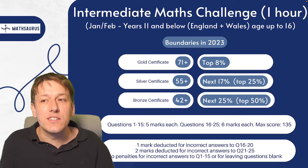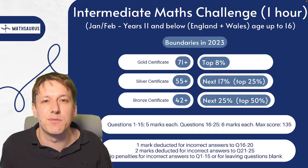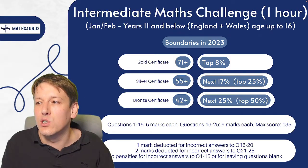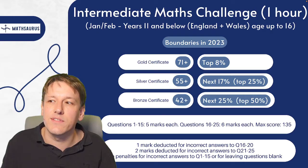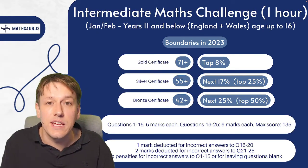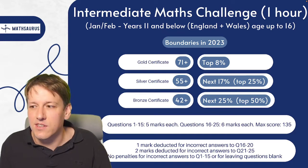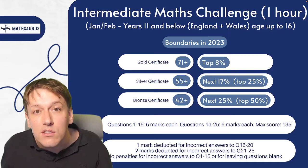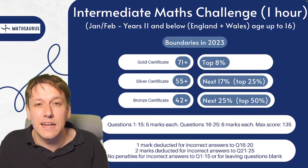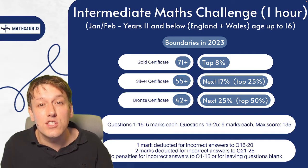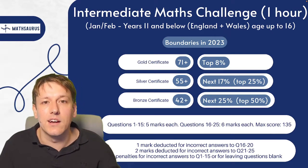The Intermediate Maths Challenge is quite similar to the Junior Maths Challenge: a multiple choice paper with 25 questions, five marks for questions 1 to 15, six marks for questions 16 to 25 and a maximum score of 135. The top students get gold, silver and bronze certificates in the same ratio — about 8% gold, 17% silver and 25% bronze. However, in the Intermediate Challenge you can lose marks for incorrect answers: questions 1 to 15 have no penalties, questions 16 to 20 lose one mark for a wrong answer, and questions 21 to 25 lose two marks. A blank answer always scores zero for that question — no deductions.